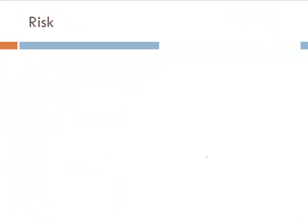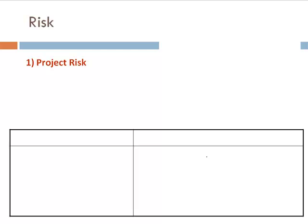Risk could be any future event with a negative consequence. You need to identify the risks associated with your project. Risks are of two types. The first is project risks. An example of such a risk is a senior team member leaving the project abruptly.